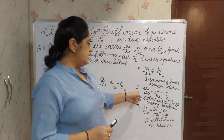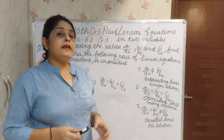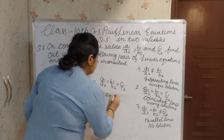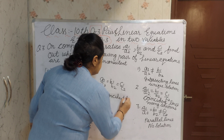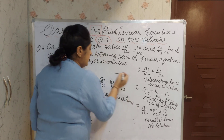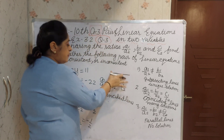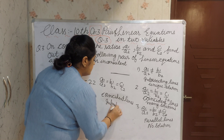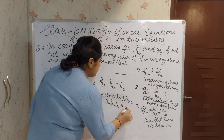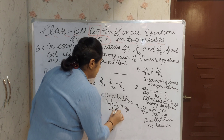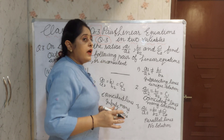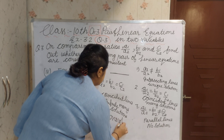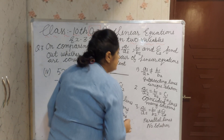You see the second condition: if A1 by A2 equals B1 by B2 equals C1 by C2, you will get coincident lines with many solutions. Since they have many solutions, they are consistent. Our answer is consistent.